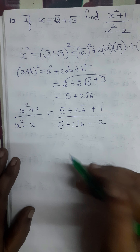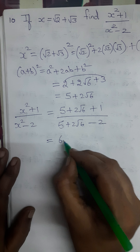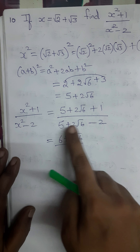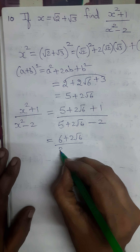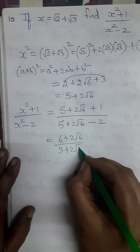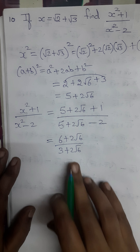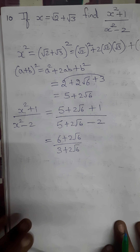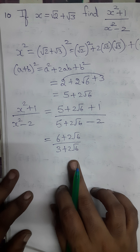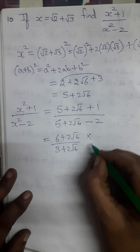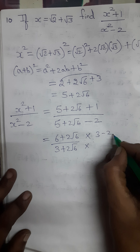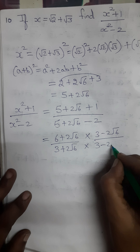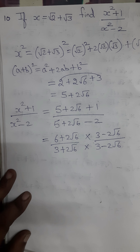Simplifying: in the numerator, 5 plus 1 gives 6 plus 2√6. In the denominator, 5 minus 2 gives 3 plus 2√6. Now let me multiply this fraction with the conjugate of the denominator. The conjugate of the denominator 3 plus 2√6 is 3 minus 2√6. I should multiply both numerator and denominator by this conjugate.